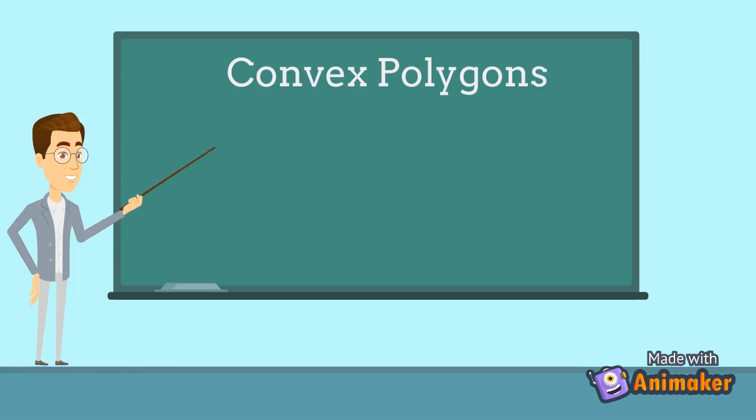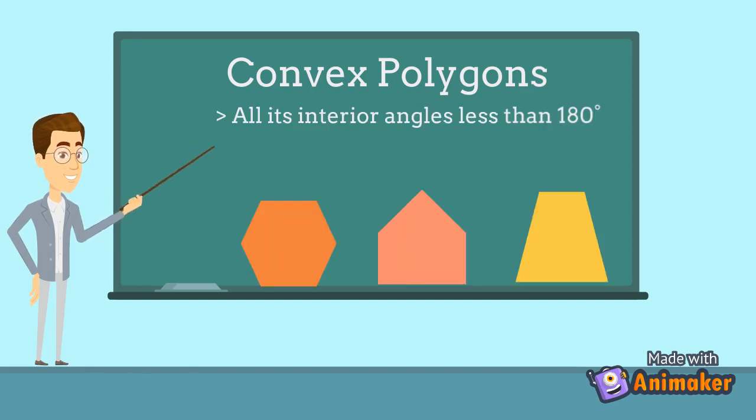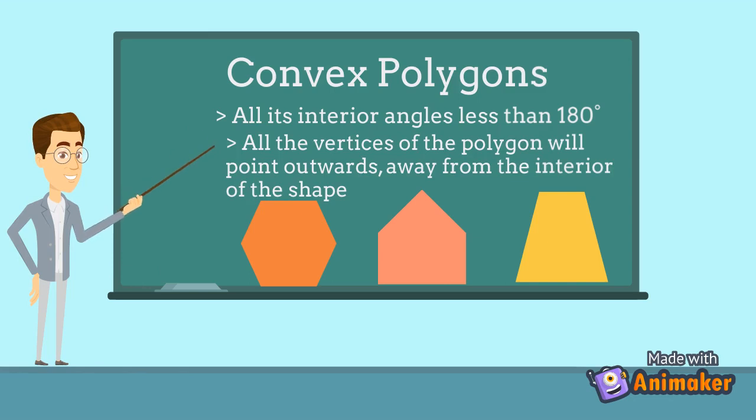There is another type of polygon, and it is convex polygon. A convex polygon is defined as a polygon with all its interior angles less than 180 degrees. It means interior angles will be either acute or obtuse. All the vertices of the polygon will point outwards, away from the interior of the shape.